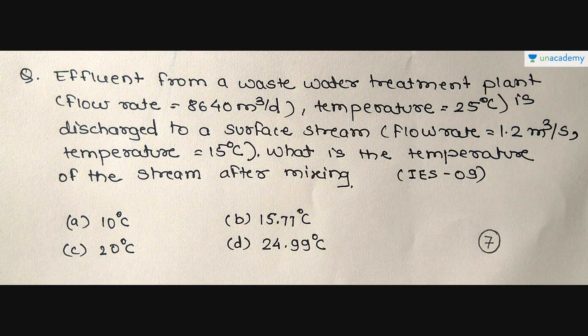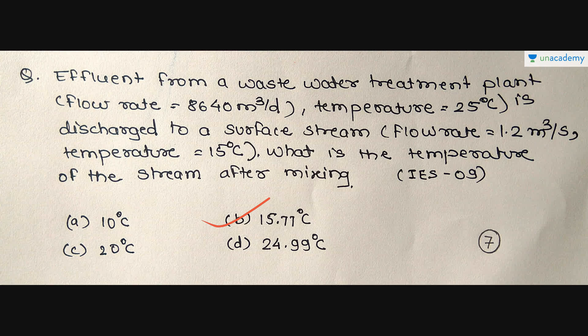The next question: effluent from a wastewater treatment plant has a flow rate of 8,640 m³/day at a temperature of 25°C. It is discharged to a surface stream whose flow rate is 1.2 m³/s at a temperature of 15°C. What is the temperature of the stream after mixing? This question was asked in IES 2009. Options: A: 10°C, B: 15.77°C, C: 20°C, D: 24.99°C.